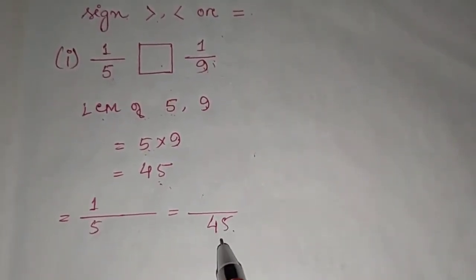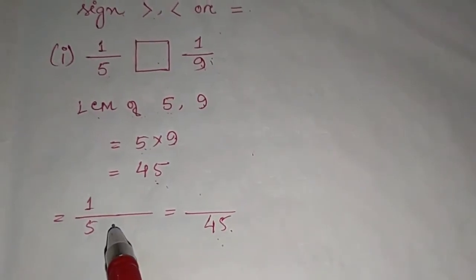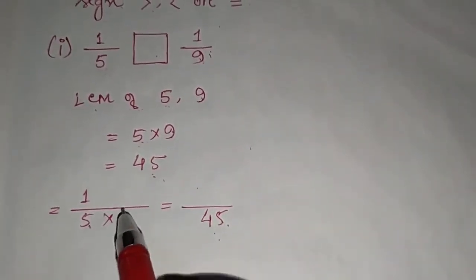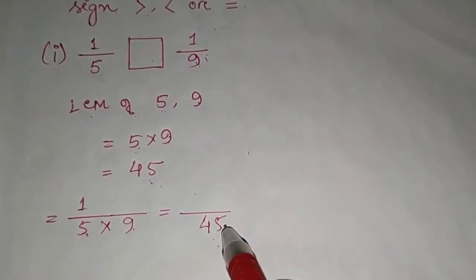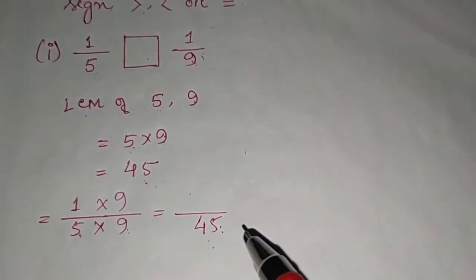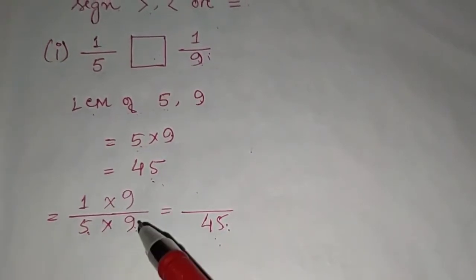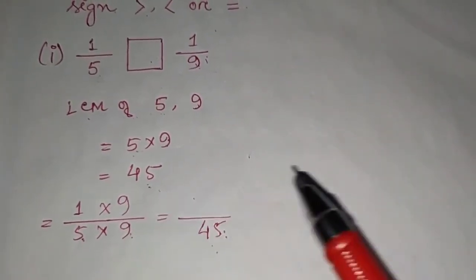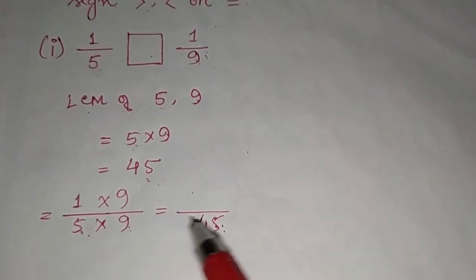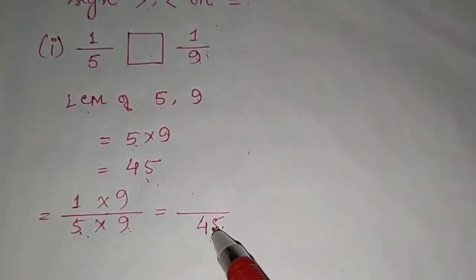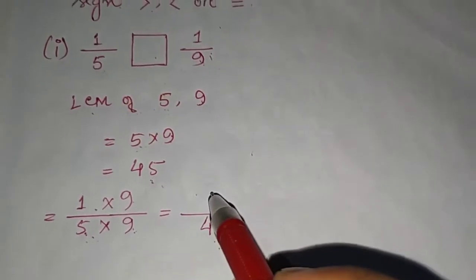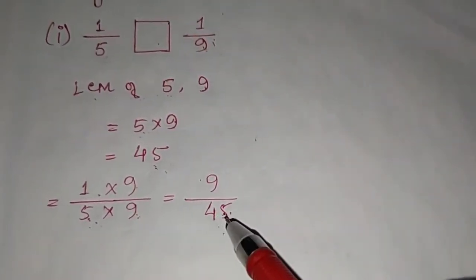For the first fraction 1/5: to make the denominator 45, we multiply 5 by 9 (since 5 × 9 = 45). Whatever number we multiply in the denominator, we must multiply the same number in the numerator. So 1 × 9 = 9, giving us 9/45.